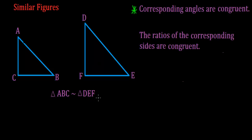Here we have a similarity statement. This similarity statement is read: triangle ABC is similar to triangle DEF. When we have a similarity statement, they're telling us that the triangles are similar, which means that I know that these two properties are true. We're first going to investigate the first property — corresponding angles are congruent.